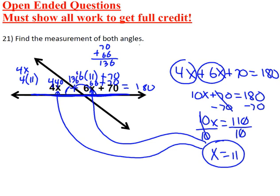A way to check this would be just to go over here, 136 plus 44, and to make sure that you get 180 degrees. Because remember, it's a straight line. It's supposed to be 180 degrees. They're supplementary.